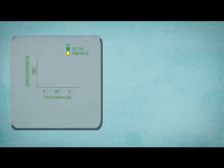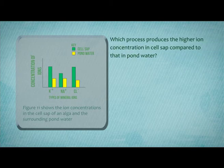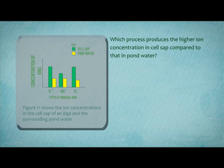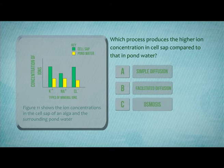Figure 11 shows the ion concentrations in the cell sap of an alga and the surrounding pond water. Which process produces the higher ion concentration in the cell sap compared to that of the pond water? A. Simple diffusion. B. Facilitated diffusion. C. Osmosis. D. Active transport.